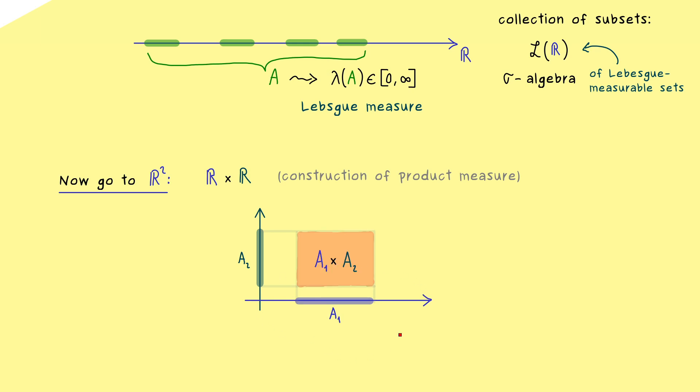And indeed, in the case that A1 and A2 are intervals in R, this one defines a nice rectangle in R2. And obviously for rectangles we already know how to calculate the area. In fact, we would just multiply the two lengths of the intervals. So lambda of A1 times lambda of A2.